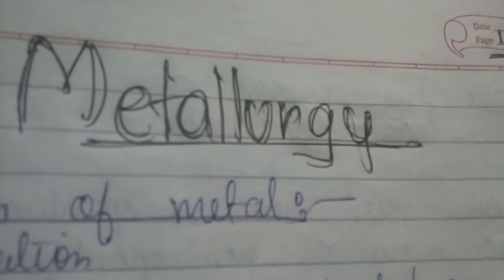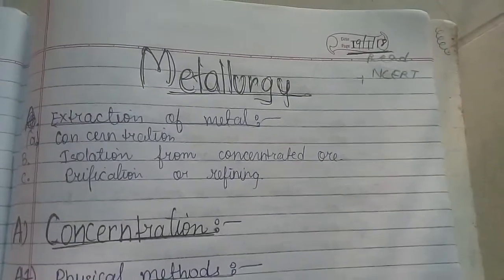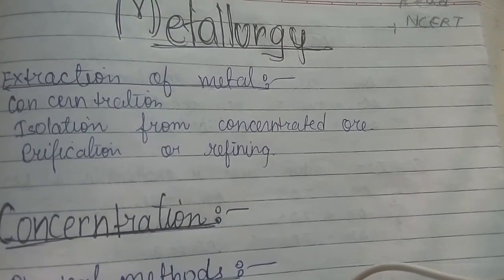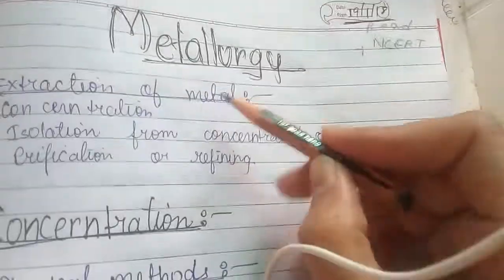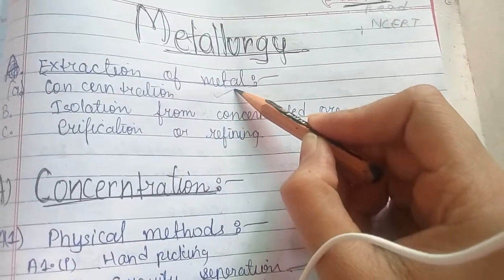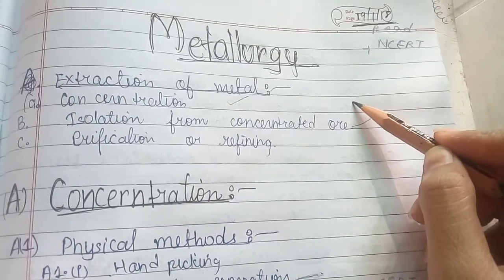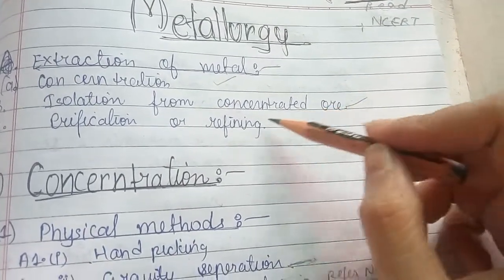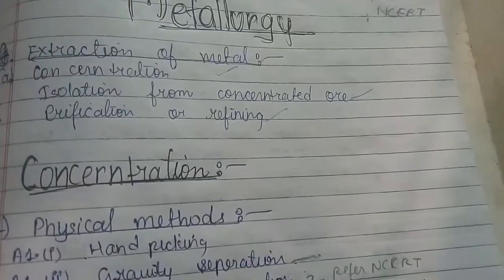Now let's get started. Metallurgy basically involves separation of metal from its ore, which we get from the earth. The first method is concentration of ore. The second method is isolation from concentrated ore. The last and final process is purification or refining.